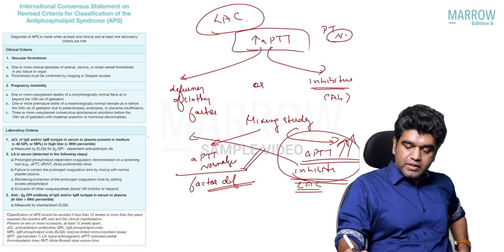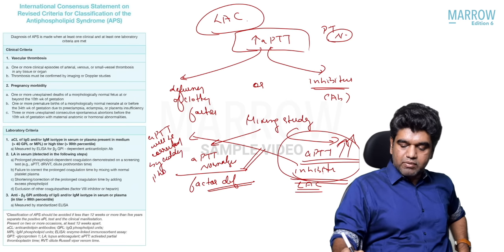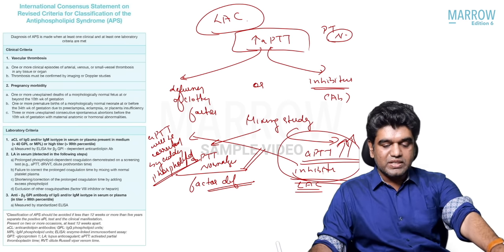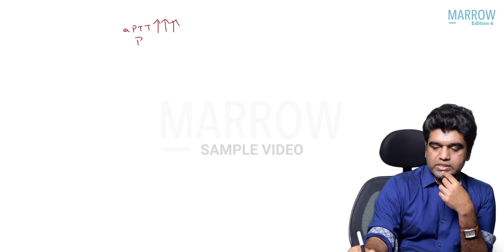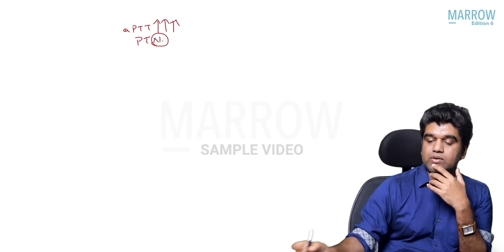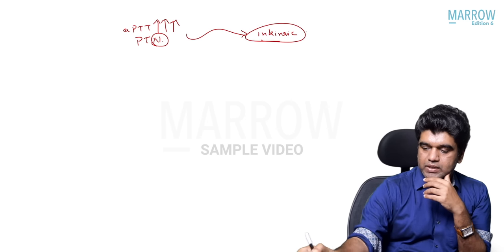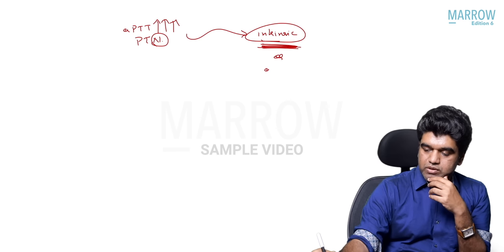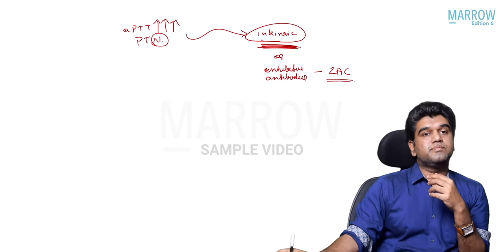APTT prolonged with PT normal means intrinsic pathway and common pathway are involved. Since PT is normal, common pathway is intact — so it is an intrinsic pathway defect or the presence of inhibitors or antibodies such as lupus anticoagulant. Intrinsic pathway defects include factor 8 defect, factor 9 defect, factor 12 deficiency, and others.